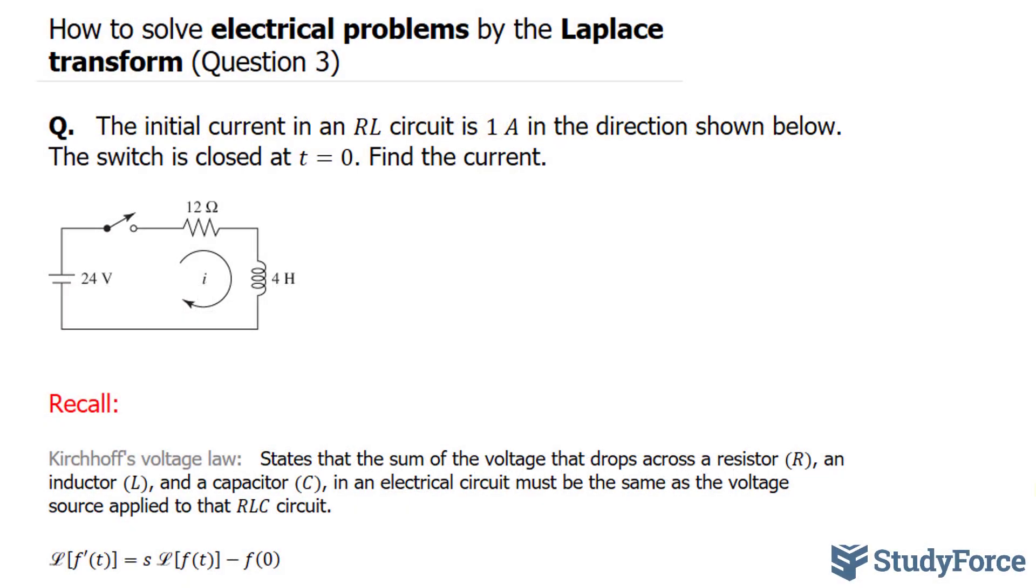The voltage source here is 24, so I'll write down 24 is equal to... The voltage at this resistor will be represented as R times the instantaneous current. This is Ohm's law. V is equal to Ri. And over here, the voltage will be represented as the inductance times the rate of change of the current with respect to time.